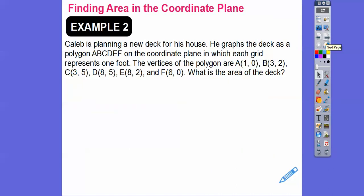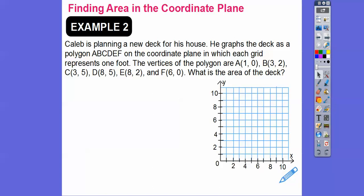All right. So here, Caleb is planning a new deck for his house. He graphs the deck as a polygon, A, B, C, D, E, F, on the coordinate plane, in which each grid represents one foot. So the vertices. So here we're going to find the area of this deck he's building. The vertices of the polygon are given. So what is the area? Well, let's first graph these guys. So make a graph. And we're going to first graph one, zero.